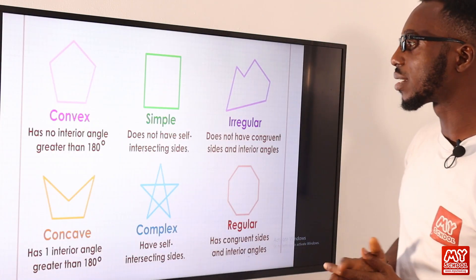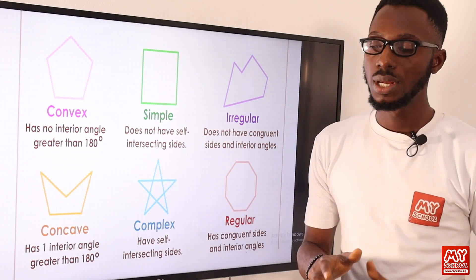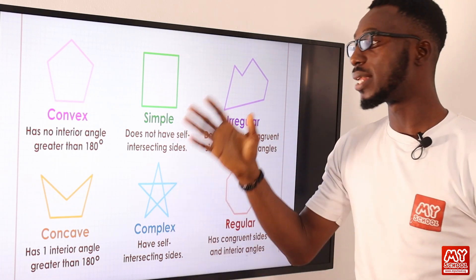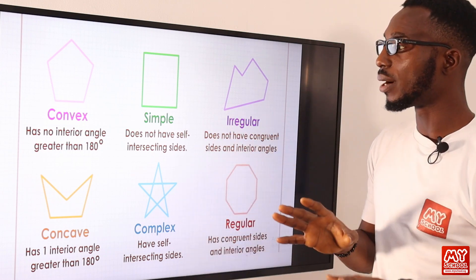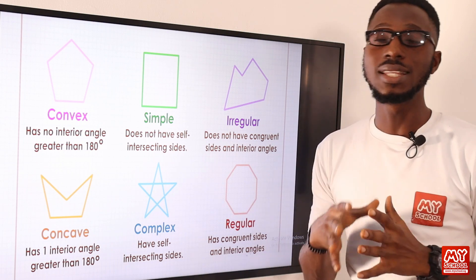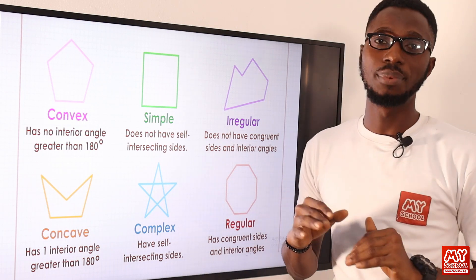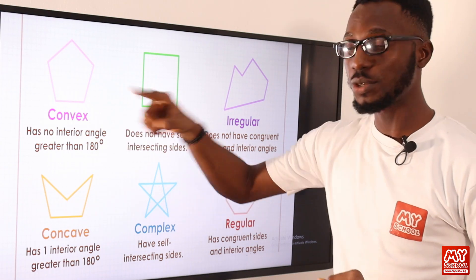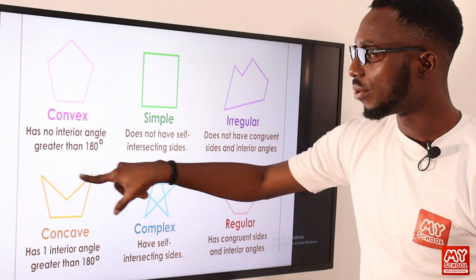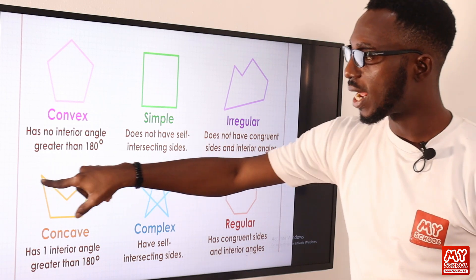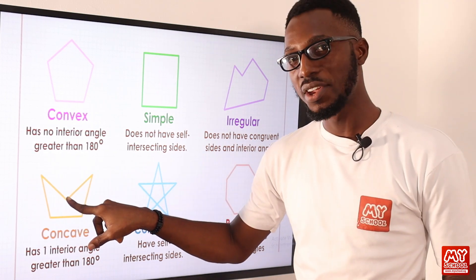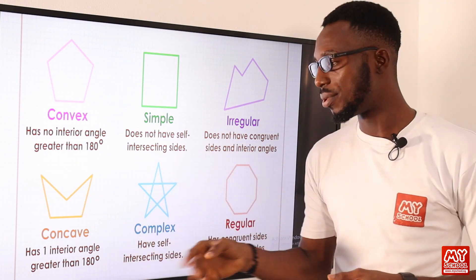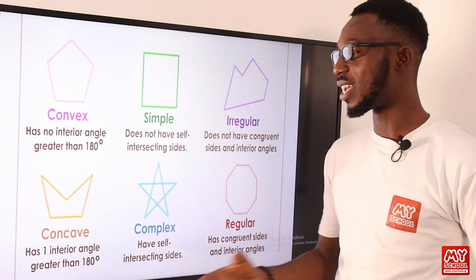We can also classify polygons based on certain concepts. We can refer to the concept of a convex polygon and a concave polygon. A convex polygon has no interior angle greater than 180 degrees — its interior angles are all less than 180 degrees. When you try to connect two endpoints together on a concave polygon, you will see that it actually flows outside the shape. A concave polygon has one interior angle greater than 180 degrees.